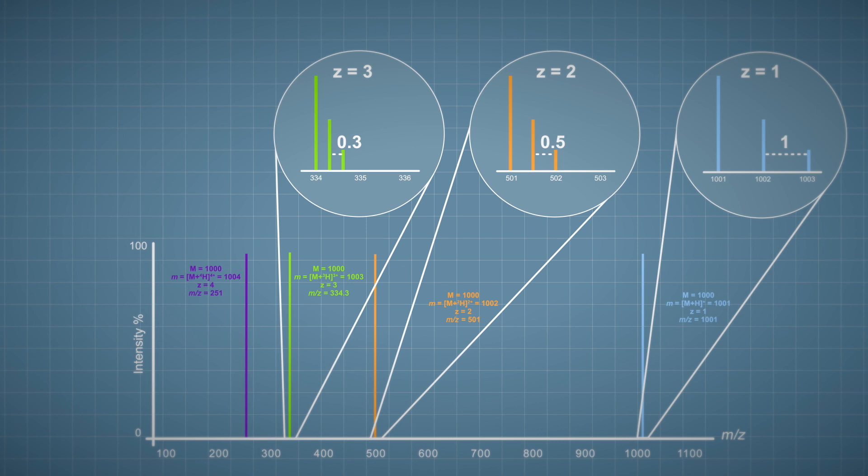Mathematically the gap between the adjacent ions in an isotope cluster is given by one divided by the charge of the ion. So using this logic we can deduce that a quadruple charged ion would have a gap of 0.25 units between the adjacent ions of the cluster.